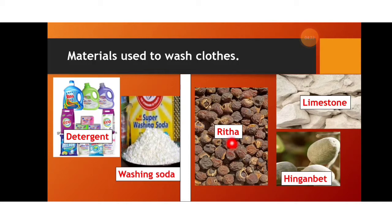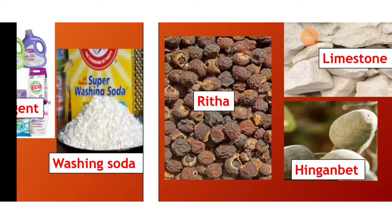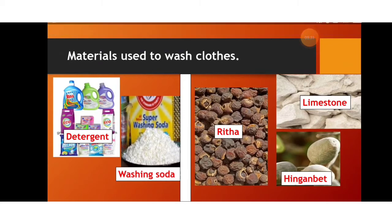You can wash your clothes in that soapy rita water. Limestone is a natural material. Hingen bet is also a fruit which makes water soapy when dipped in it. So rita, limestone, and hingen bet are natural materials used to wash clothes. Detergents, liquid soap, washing powder, and washing soda are man-made materials used to wash clothes. Rita is also called soap nut.